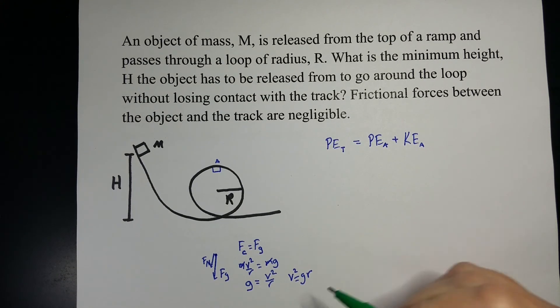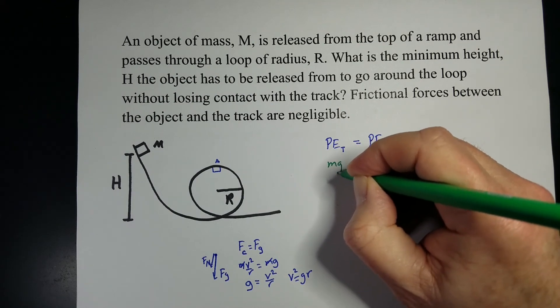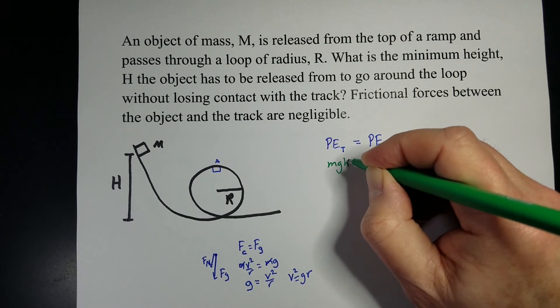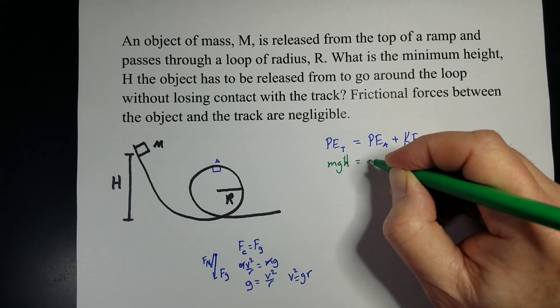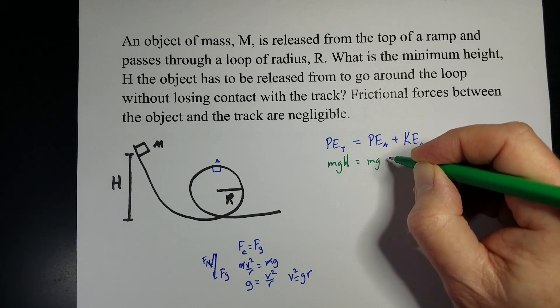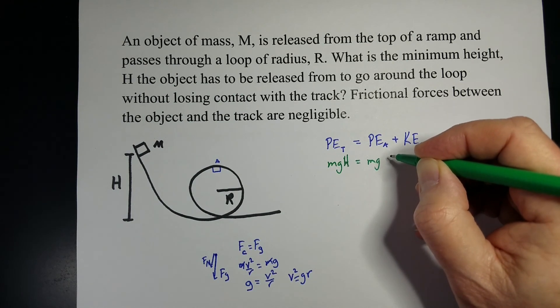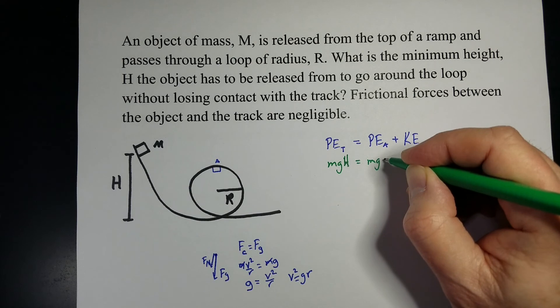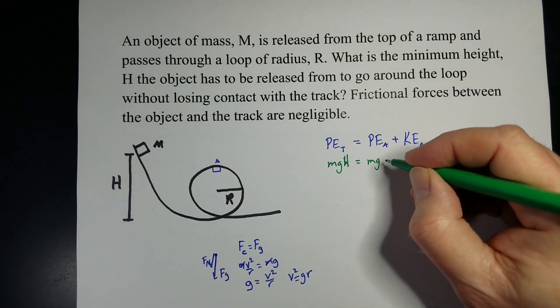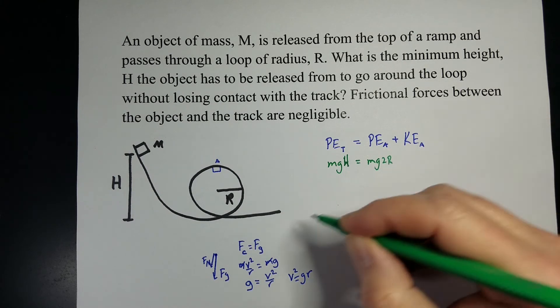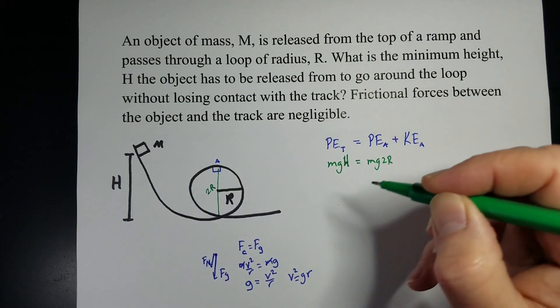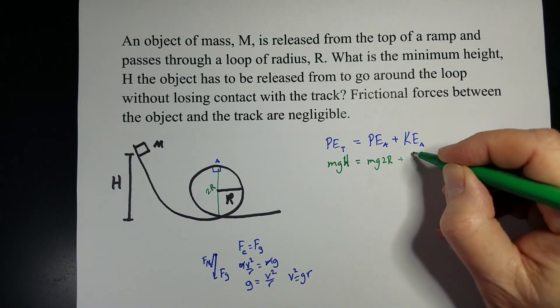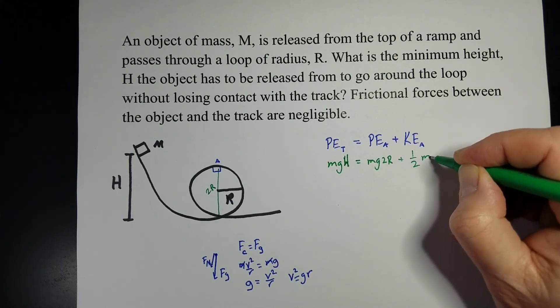All right, so we're going to keep that in our pocket. We're going to have mgh, well in this case, it's capital H, let's go ahead and substitute that in, equals mg at some radius. Well, it will be twice that radius, so 2r, because we're going to say that it's the ground, so that distance will be 2r, plus 1 half mv squared.